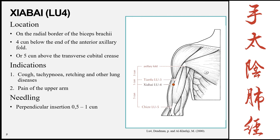The next point is Xiabai, Lung 4, also located on the radial border of the biceps brachii, 4 Cun below the anterior axillary fold, or 5 Cun above the cubital crease. Indications include cough, tachypnea, retching, other lung diseases, and pain of the upper arm as a local point. The insertion is the same as Lung 3: perpendicular insertion, 0.5 to 1 Cun.